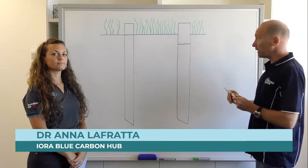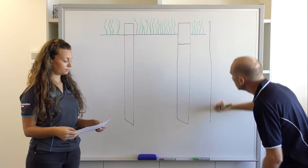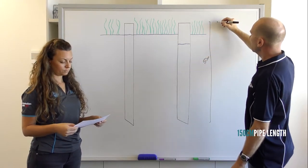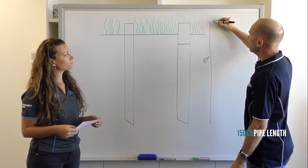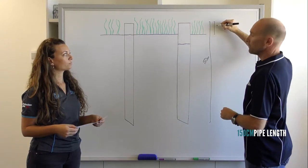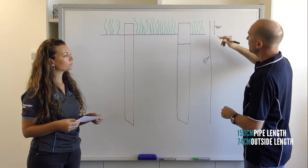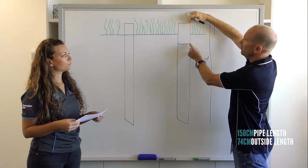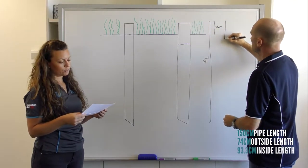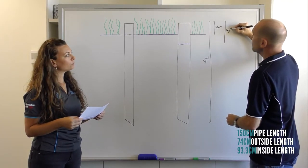So in that video, we used a length of PVC pipe that was 150 centimeters. We also measured the length of pipe that was outside the sediment, which was 74 centimeters, and the length of pipe that was inside the core, which was 93.3 centimeters.